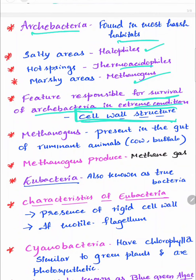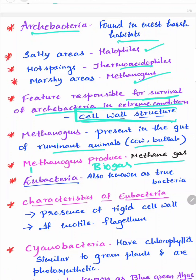Methanogens are present in the gut of ruminant animals such as cows and buffaloes. Methanogens produce a gas known as methane gas or biogas, also known as marsh gas. Keep a note on this.